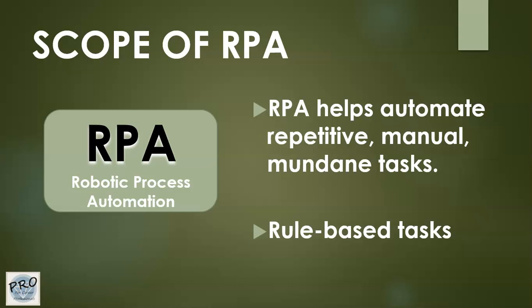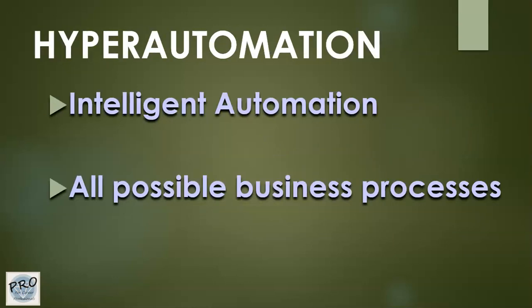But if you wanted to build more prediction into an existing process that is not meeting the requirements of RPA, that takes it a step further — and that is hyper automation. Hyper automation consists of automating all possible business processes, incorporating prediction, thinking of exceptions, and building more intelligence into the system.